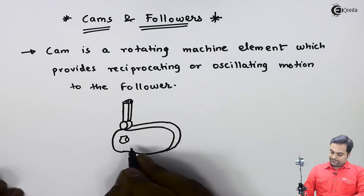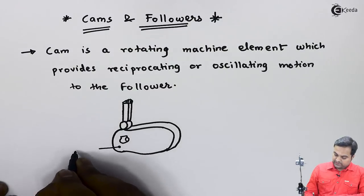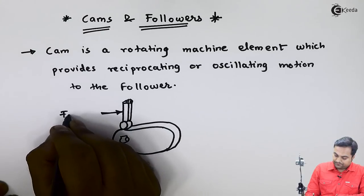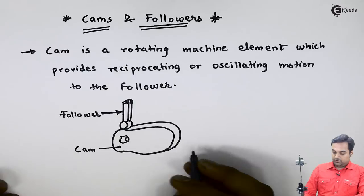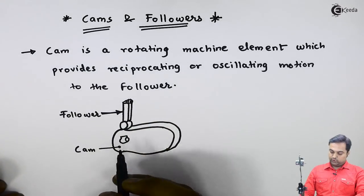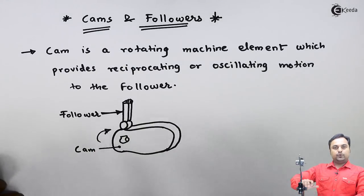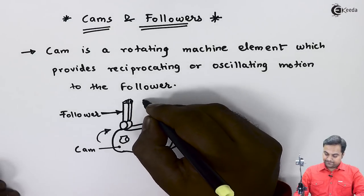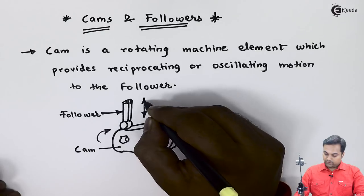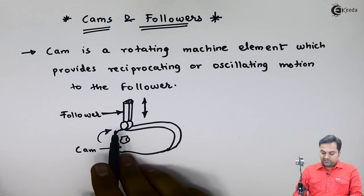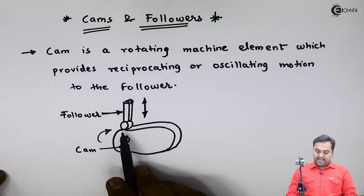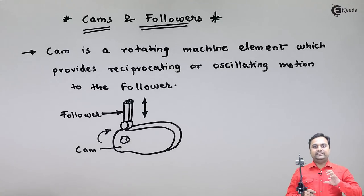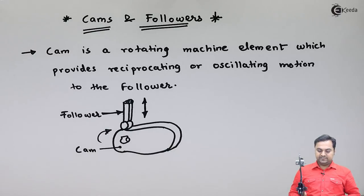This member in the diagram is called the cam and the other member over it is called the follower. As per the definition, cam is a rotating machine element. When the cam is rotating, the follower is reciprocating or oscillating. In this diagram it is reciprocating, so follower moves up and down as the cam rotates.